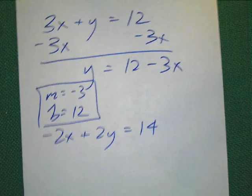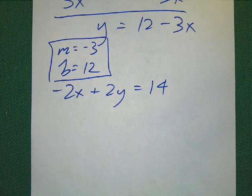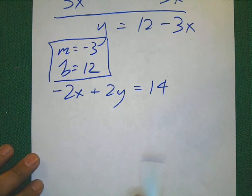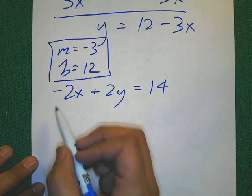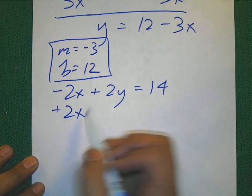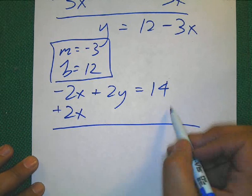All right. Now, let's try this second one, which can be a little tricky, but just don't freak out. Let's go ahead and try it. If that's a negative 2x, what's the opposite of negative 2x? That's right. It's positive 2x.